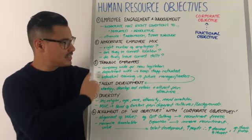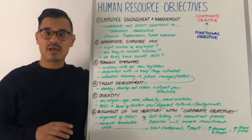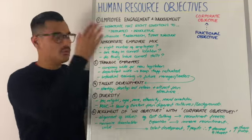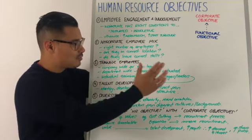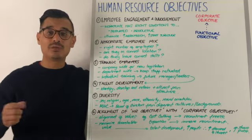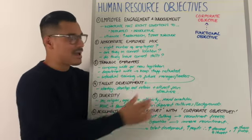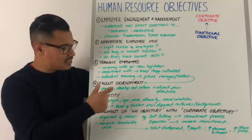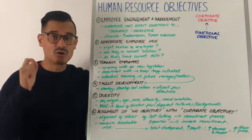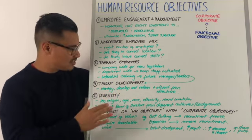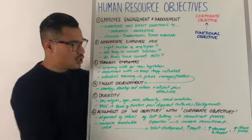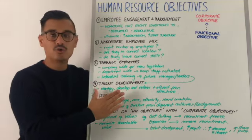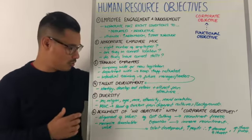Number three: training employees. It could be training at various levels — perhaps company-wide training due to new legislation, or departmental training to keep staff motivated, or individual-level training for future managers and leaders, sometimes referred to as talent development. Talent development is essentially to identify, develop, and retain your absolute best people, because you don't want them to be attracted to go elsewhere. It could be the HR team's role to ensure your best talent stays with the business and helps it grow.